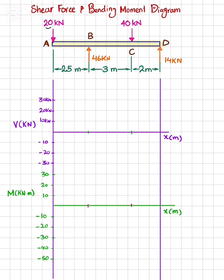At point A you can see you have a 20 kN load that is downward, so it will be minus 20. Moving from point A to B there is no other load so it will remain horizontal. At point B we have a 46 kN load, so minus 20 plus 46 is going to give you plus 26. So shear force will change from minus 20 to plus 26.